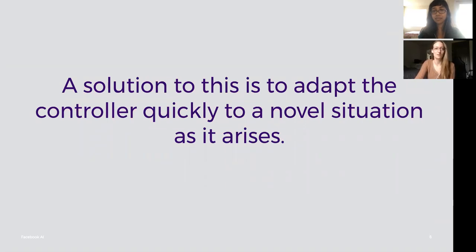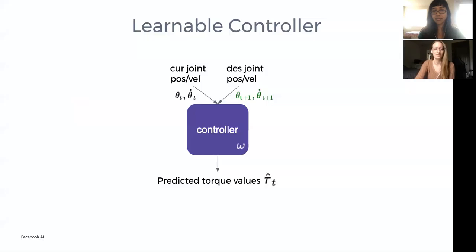One solution to this problem is to adapt the controller quickly to a novel scenario as it arises. The learnable controller that we want to adapt takes the current and goal joint configurations as inputs and outputs torque values. Details about this controller can be found in our paper.